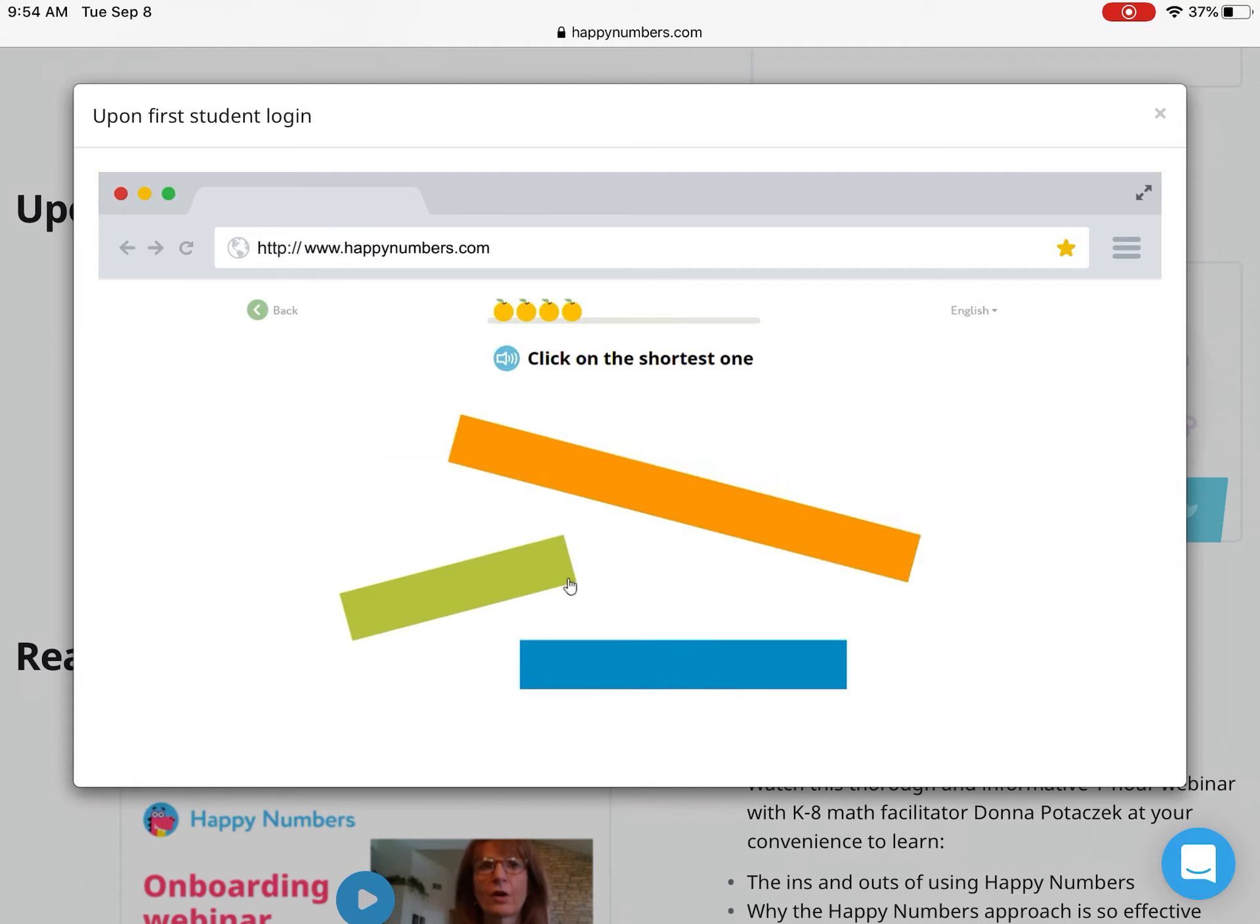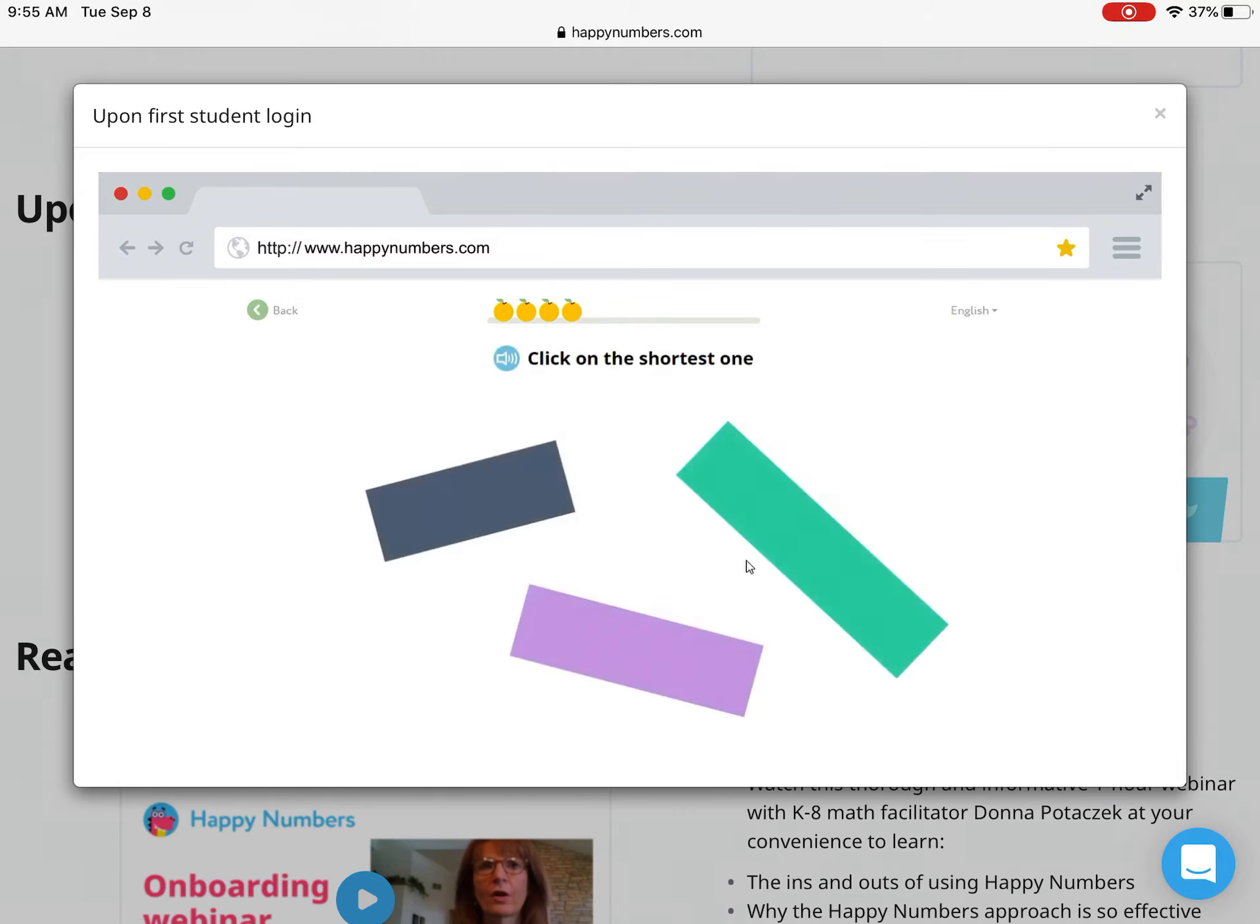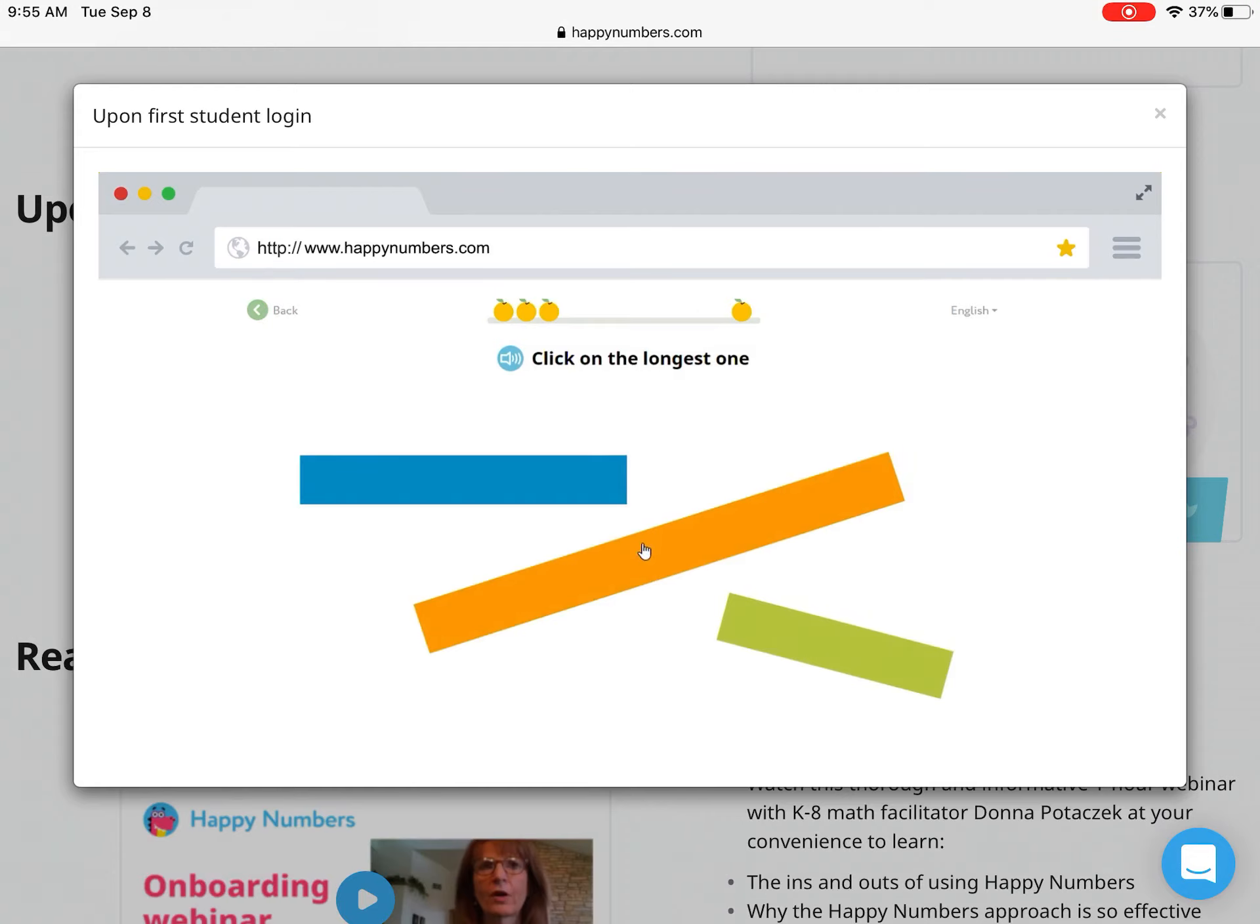While students are learning with Happy Numbers, Happy Numbers is learning about them. We'll adjust the number of exercises based on how much practice students need. That way, each student moves at his or her own pace through the curriculum. No one gets bored or left behind. Students can work independently, because Happy Numbers responds to them and makes decisions about their learning just the way a teacher works.